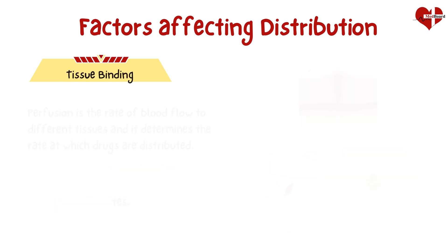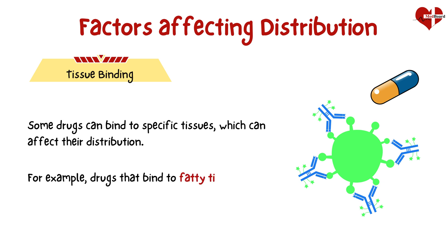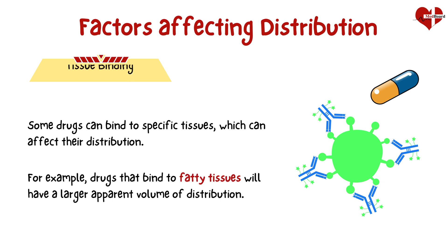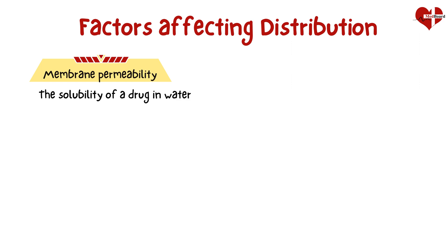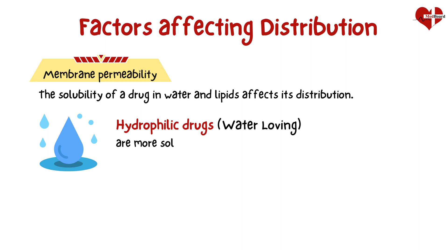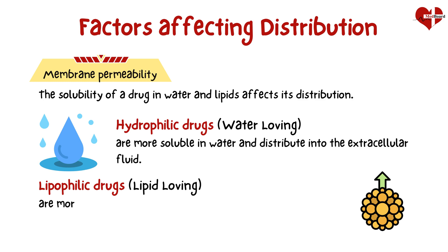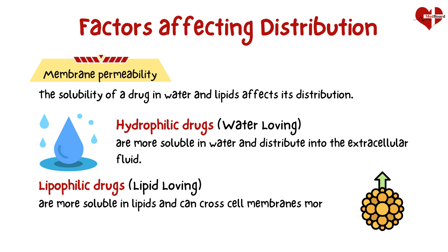Some drugs can bind to specific tissues, which can affect their distribution. For example, drugs that bind to fatty tissues will have a larger apparent volume of distribution. The solubility of a drug in water and lipids also affects its distribution. Hydrophilic drugs are more soluble in water and distribute into the extracellular fluid, while lipophilic drugs are more soluble in lipids and can cross cell membranes more easily.